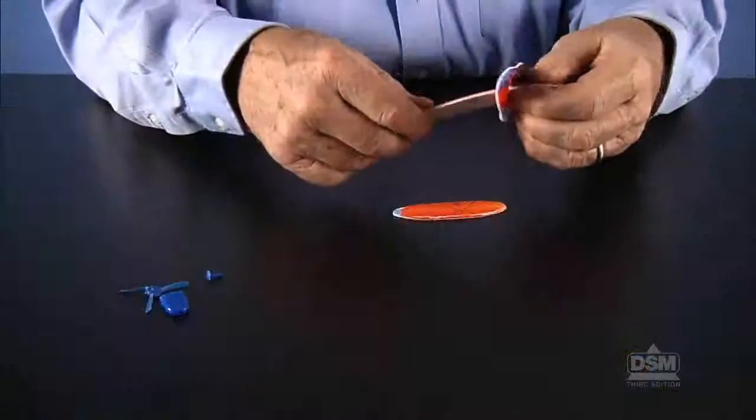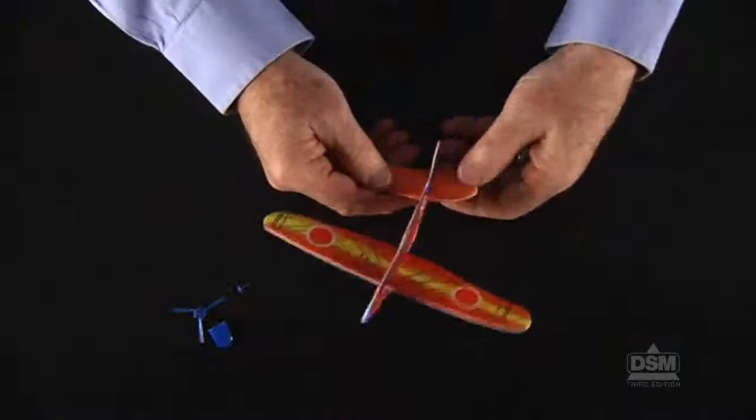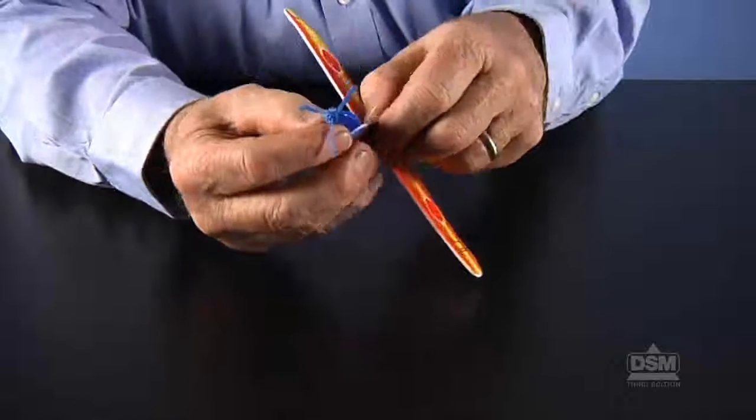Divide the class into teams of two and give a glider to each team. Then, instruct teams to assemble the gliders by sliding the wing and tail pieces through the slots in the fuselage and attaching the propeller to the nose of the craft.